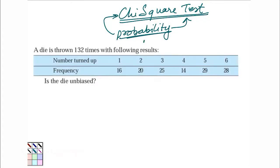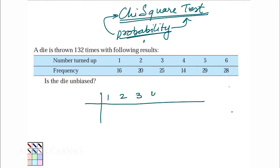Here is our question. It says a die is thrown 132 times with the following results. What are the possible outcomes when you throw a die? You could get a 1, 2, 3, 4, 5, or 6 when you roll a die — you could get these values.